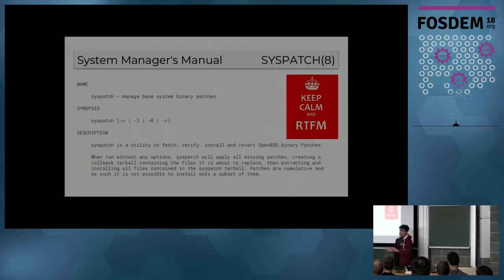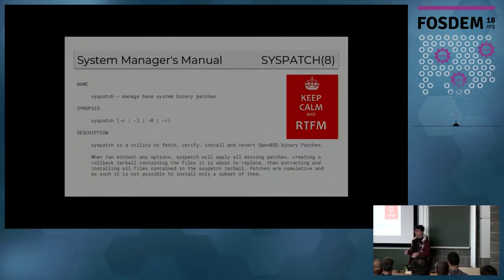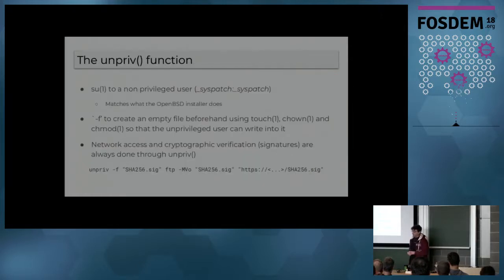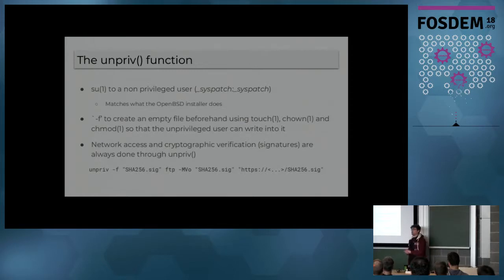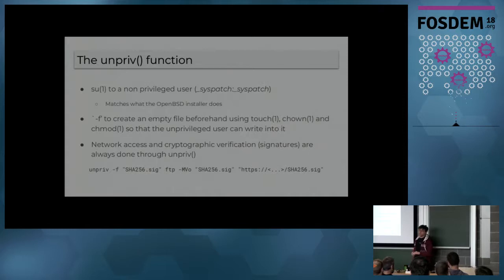Syspatch is a really simple tool. You have four options which we will detail later. If you run it without any arguments, it will install all the missing patches automatically — you don't have to pass any options. It's a small utility that will fetch, install, and roll back binary patches. Within the script, we implemented a small unprev function. This function is used to drop privileges while doing sensitive operations like going online or doing cryptographic verification. We drop privileges to a user called underscore syspatch, mimicking exactly what the OpenBSD installer does.